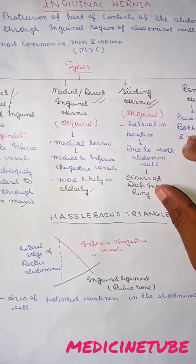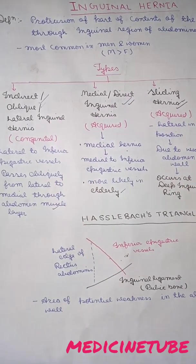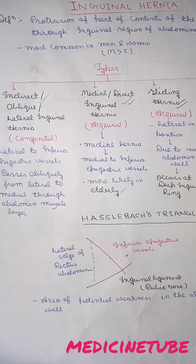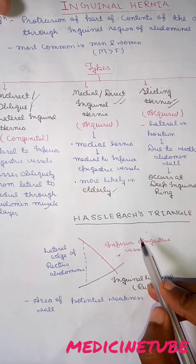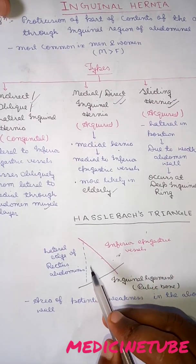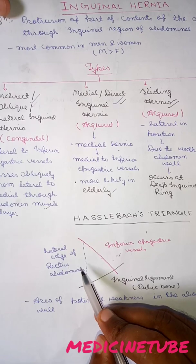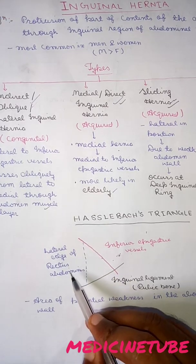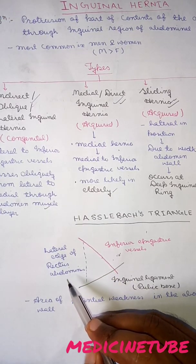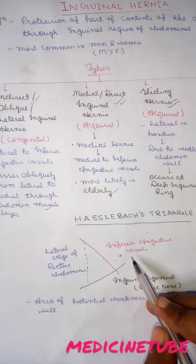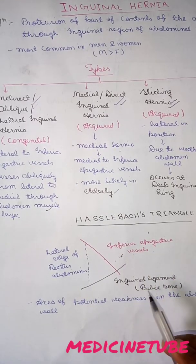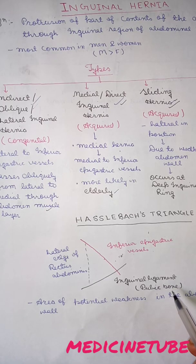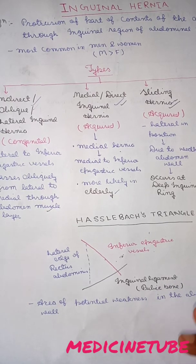Now, one more important space in our abdomen — the potential inguinal hernia space, which is called Hesselbach's triangle. Hesselbach's triangle is bounded by the lateral edge of the rectus abdominis muscle, medially by the inferior epigastric vessels, and below by the inguinal ligament, which is below the pubic bone. It is the potential space for hernia because it is weak.